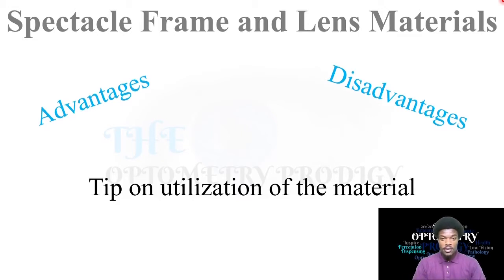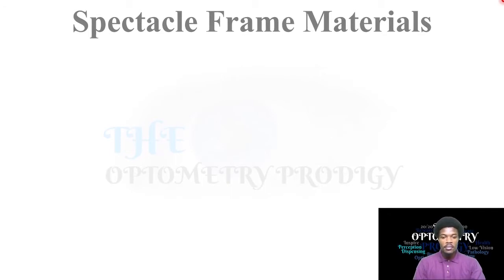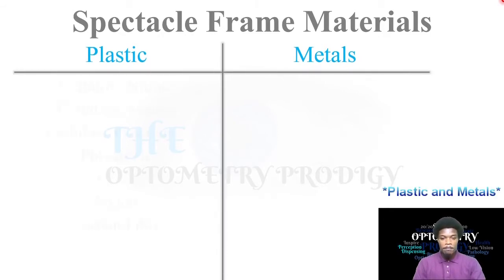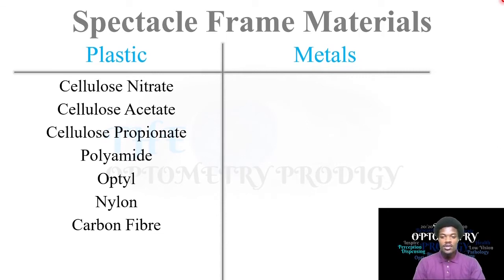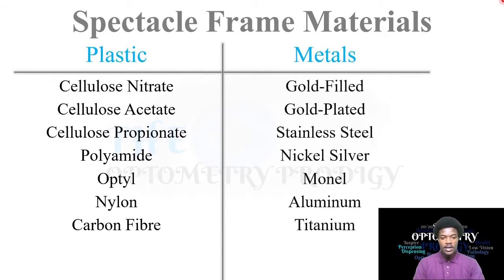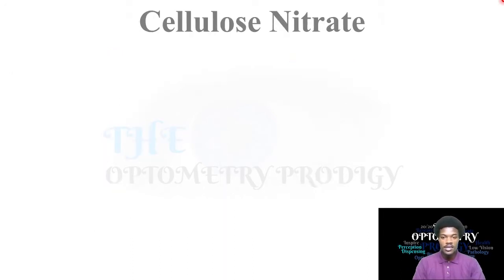For spectacle frame materials, we have plastics and metals. Under plastics we'll cover: cellulose nitrate, cellulose acetate, cellulose propionate, polyamide, Optyl, nylon, and carbon fiber. For metals, we will look at gold filled, gold plated, stainless steel, nickel silver, monel, aluminum, and titanium.